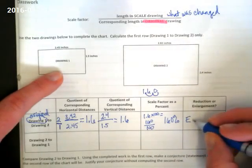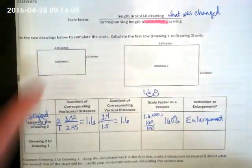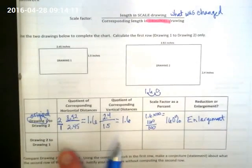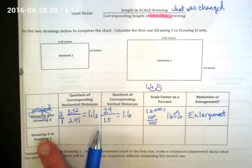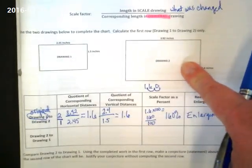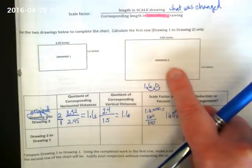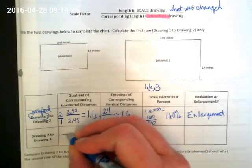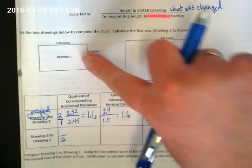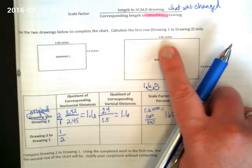So now we're changing what the original is. And this time we're going to say we're going from drawing 2 to drawing 1. If this is our original and our scale drawing is this one, we're going to have this one be in the base of our scale factor and this one on top.